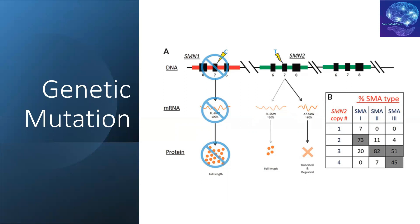For SMN2, there are copy numbers that can be up to six. The higher the copy numbers, the milder the manifestation of the disease. As shown in the table, SMN1 represents the severe variant, SMN2 is less severe, and SMN3 is even less severe manifestation of spinal muscular atrophy — all depending on the SMN2 copy numbers.